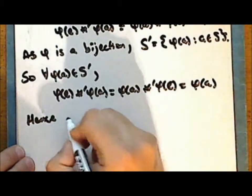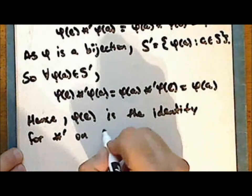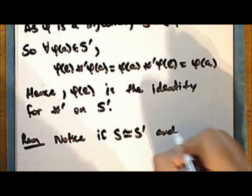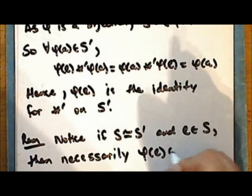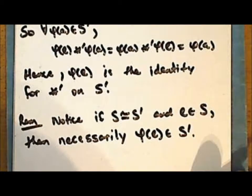Hence φ(E) is the identity for the operation star prime on S'. Notice that if S is isomorphic to S' and the identity element is in S, then necessarily φ(E) is in S' as φ is a bijection. This suggests that if a monoid is isomorphic to a second structure, then that second structure is also a monoid, and we shall next prove that.